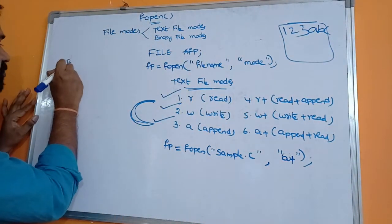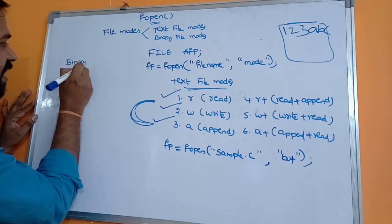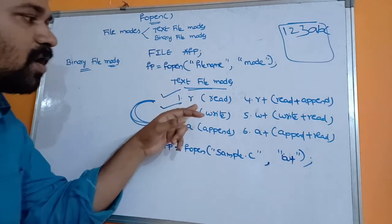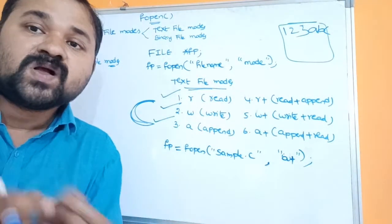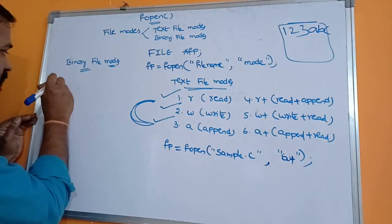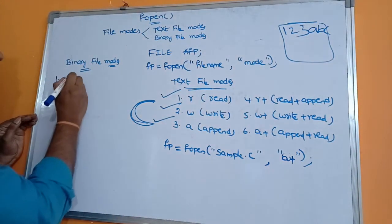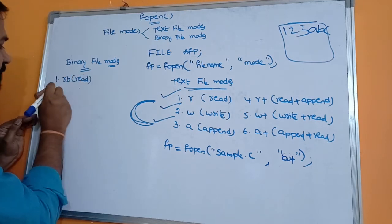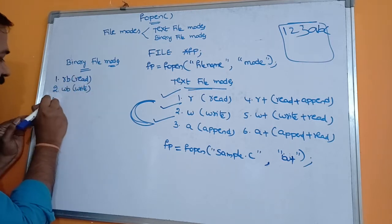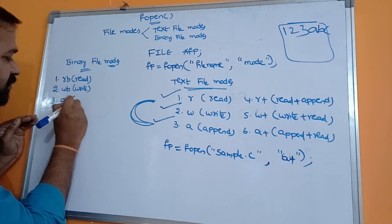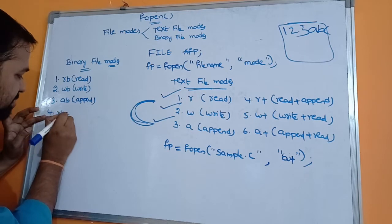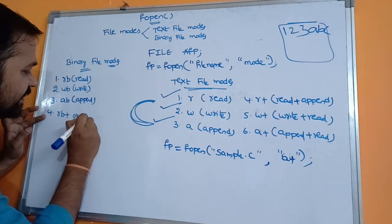Now let's see binary file modes. Binary file modes are similar to text file modes, but after each letter we add 'b', where b stands for binary file. The first one is rb — read operation on binary file. Second is wb — write operation on binary file. Third is ab — append operation on binary file.